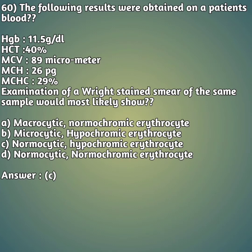Based upon these lab reports, we can define this condition as option C - normocytic hypochromic erythrocytes. To get proficiency in these anemias, you have to be thorough with RBC indices like MCH, MCHC, and MCV values so that we can easily classify them as normocytic, microcytic, hyperchromic, or macrocytic.